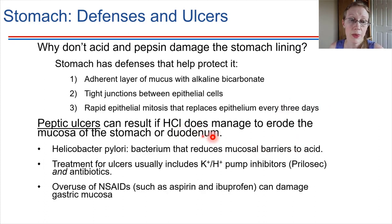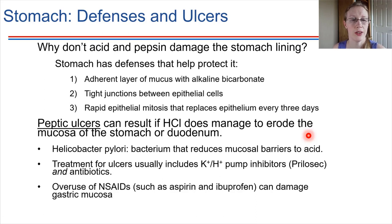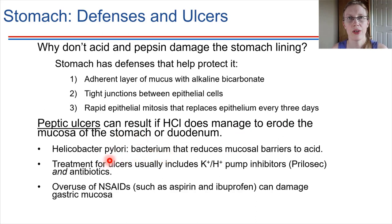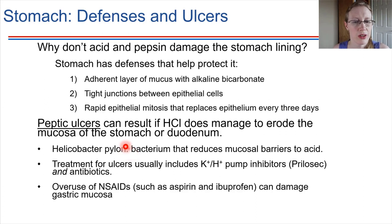Sometimes HCL does manage to erode sections of the stomach mucosa, and also in the first section of the small intestine. This is what an ulcer is — a peptic ulcer is a spot where there has been damage due to these substances. Many people who have ulcers also have a bacterium called Helicobacter pylori living in their stomach. The presence of this bacteria doesn't necessarily cause the ulcer, but it can contribute by reducing the mucosal barrier, making a person more susceptible to damage.